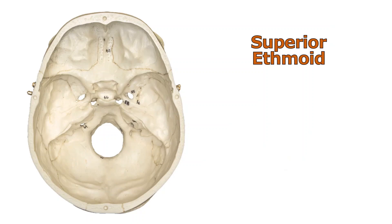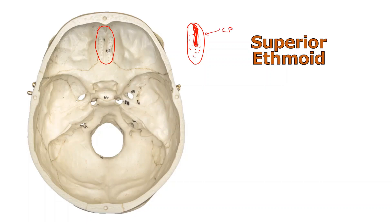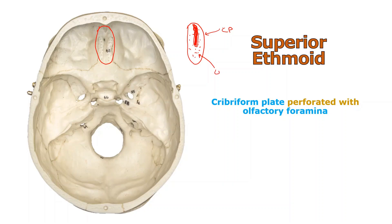With the calvarium removed, where's the ethmoid bone in this image? It's right here — and that's all you can see of it. It looks like an oval-shaped structure with holes poked in it, and there's a very skinny structure that's likely the crista galli sticking up from the top. This is the cribriform plate. The cribriform plate is perforated — meaning poked with holes — and those holes are called olfactory foramina, which is the plural for foramen.